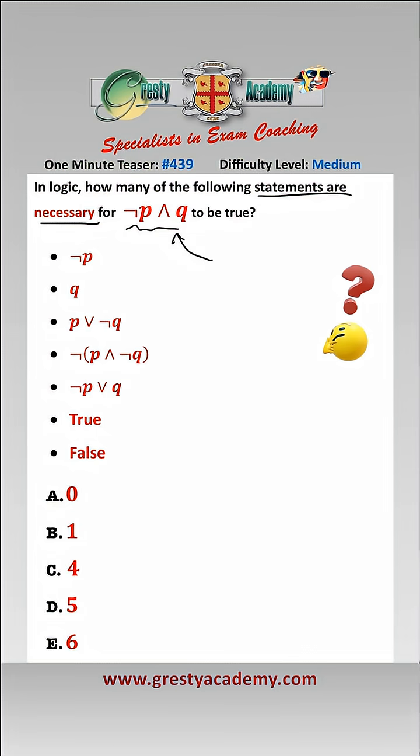So for our conclusion to be true, P must be false and Q must be true. So let's go through each one of our statements and see if they are true.